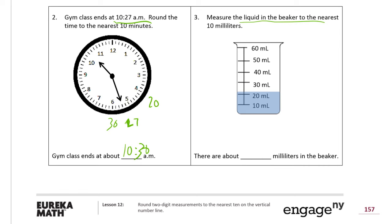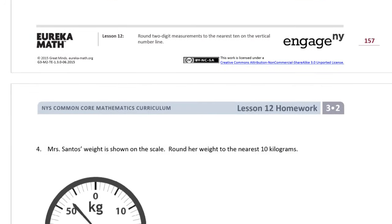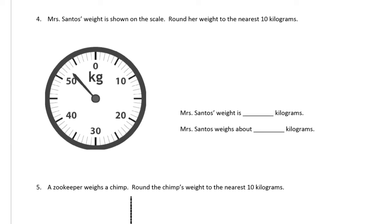Measure the liquid in the beaker to the nearest 10 milliliters. This is a picture of a beaker, it's like a glass cup, and it's got markings on here to tell you how far up the liquid is. To the nearest 10, well it's in between the 20 and the 30, you can see the level here, but it's closer to the 20, so we're going to say it's about 20 milliliters in the beaker.